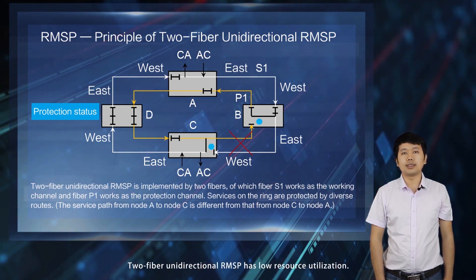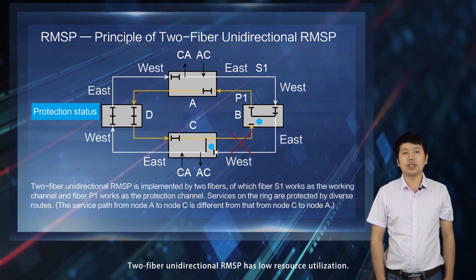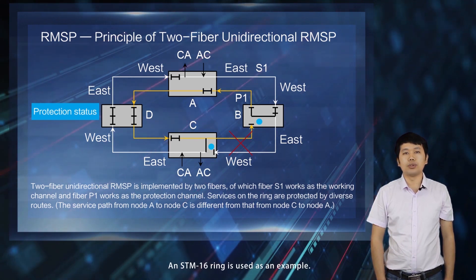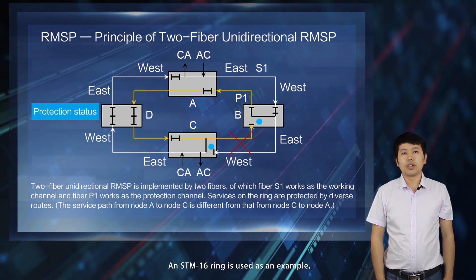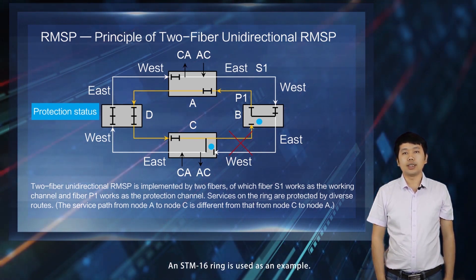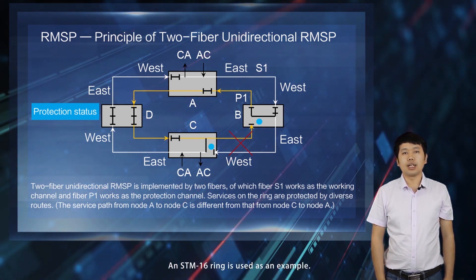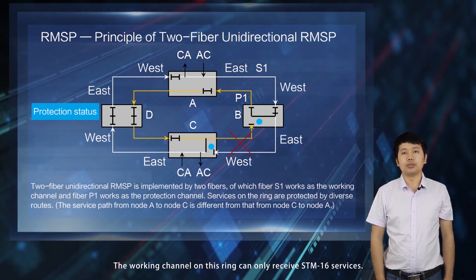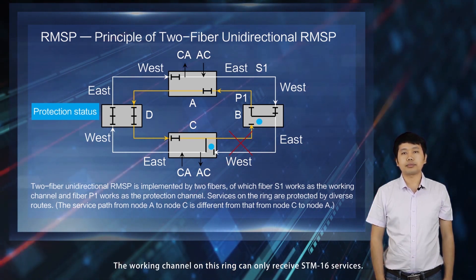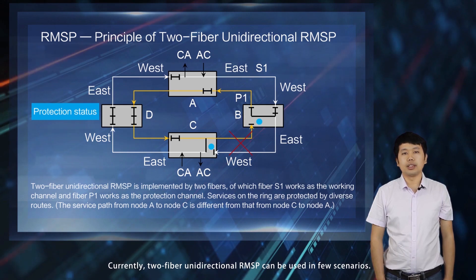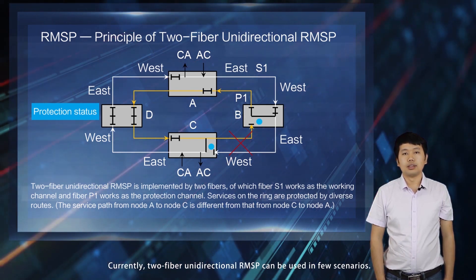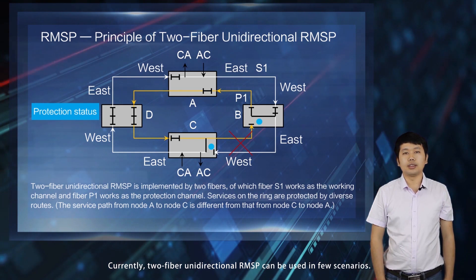Two-fiber unidirectional RMSP has low resource utilization. Using an STM-16 ring as an example, the working channel on this ring can only receive STM-16 services. Currently, two-fiber unidirectional RMSP can be used in few scenarios.